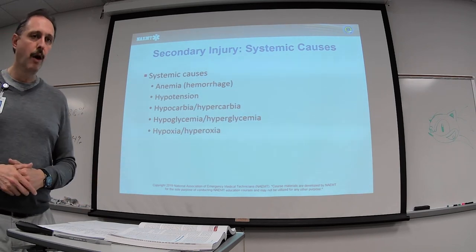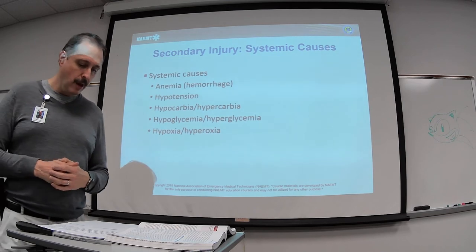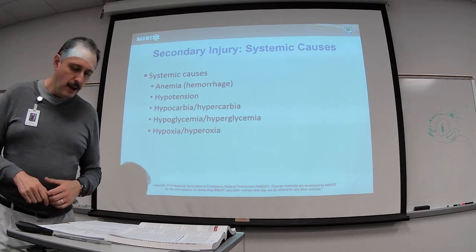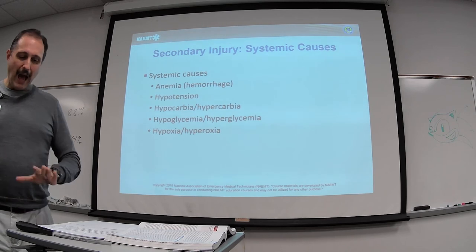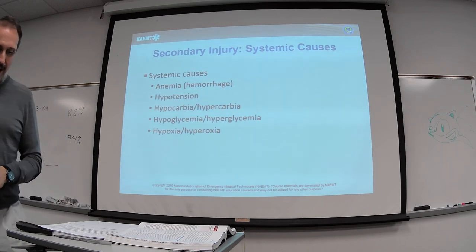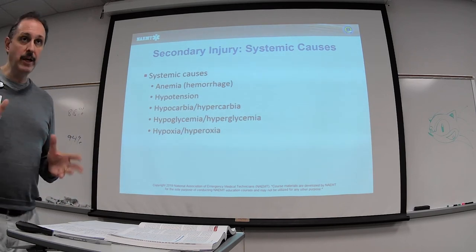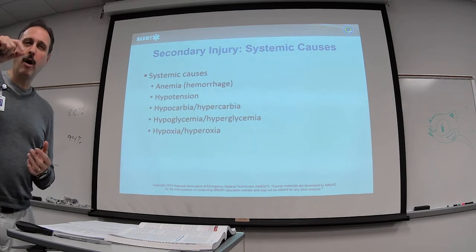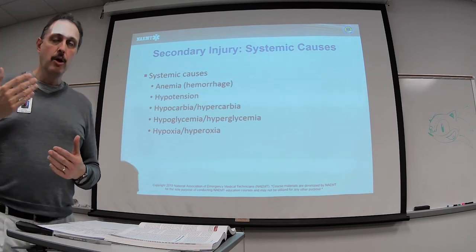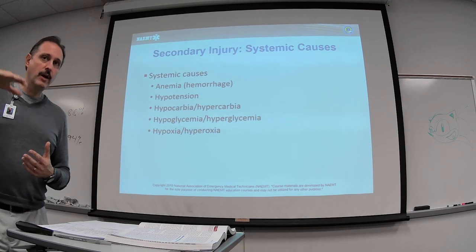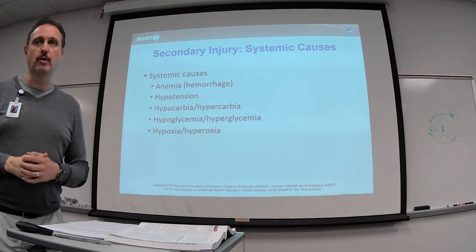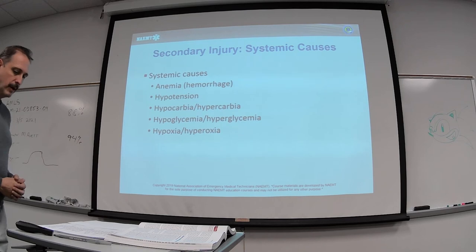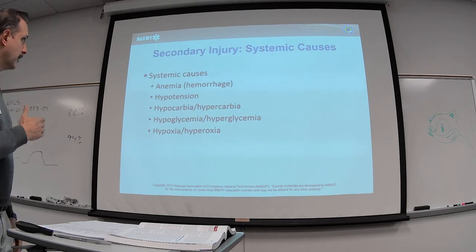Hypocarbia versus hypercarbia — low CO2 versus high CO2, like a COPD patient who is hypercarbic. Low levels of CO2 cause vasoconstriction, while high levels of CO2 cause vasodilation. With injuries, you want CO2 in the 30 to 35 range. Getting up to 45 to 50 starts causing problems, especially with an associated brain injury.